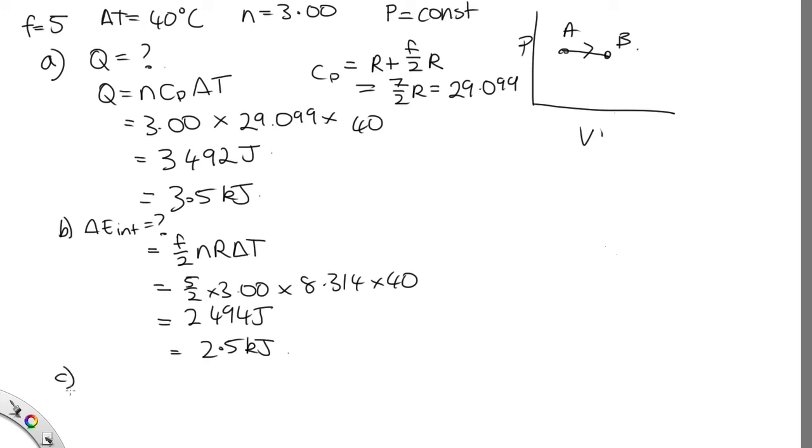Part C asks us how much work is done on the gas. So now we can finally use the first law of thermodynamics. Work is equal to the change in internal energy minus the heat added. So this is 2,494 minus 3,492.